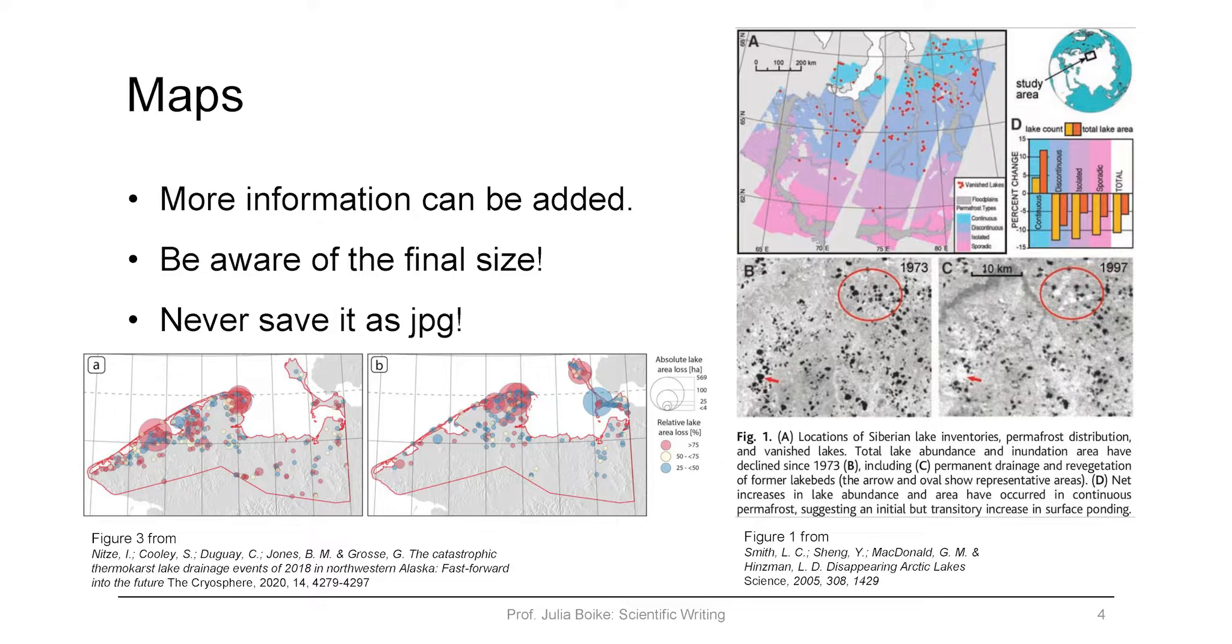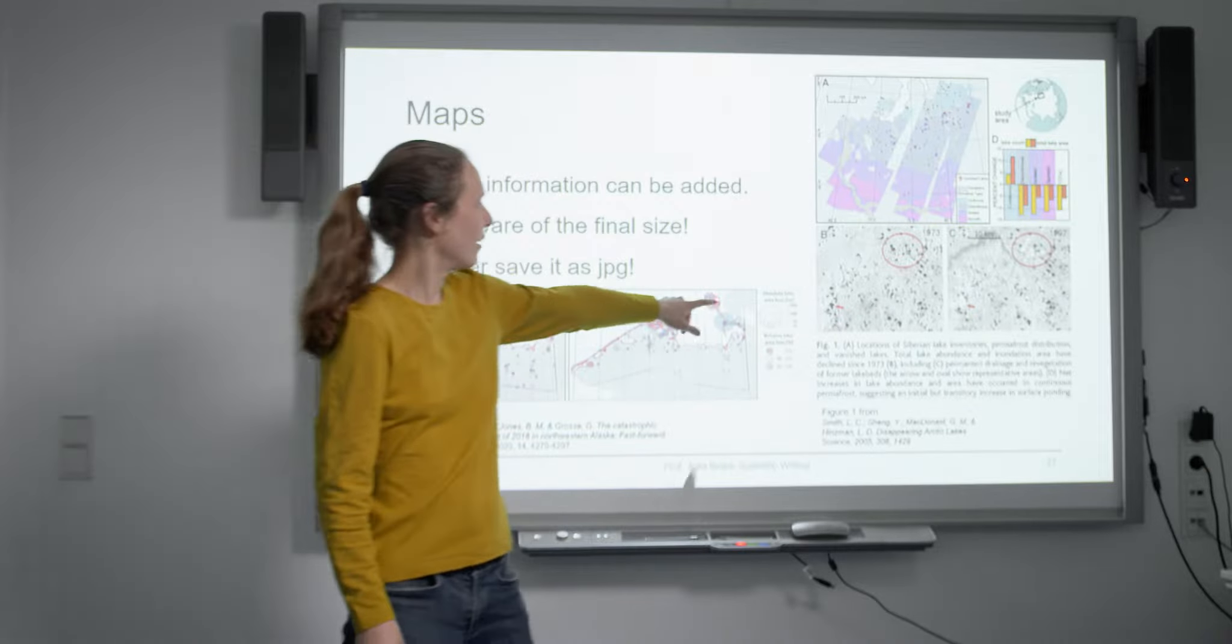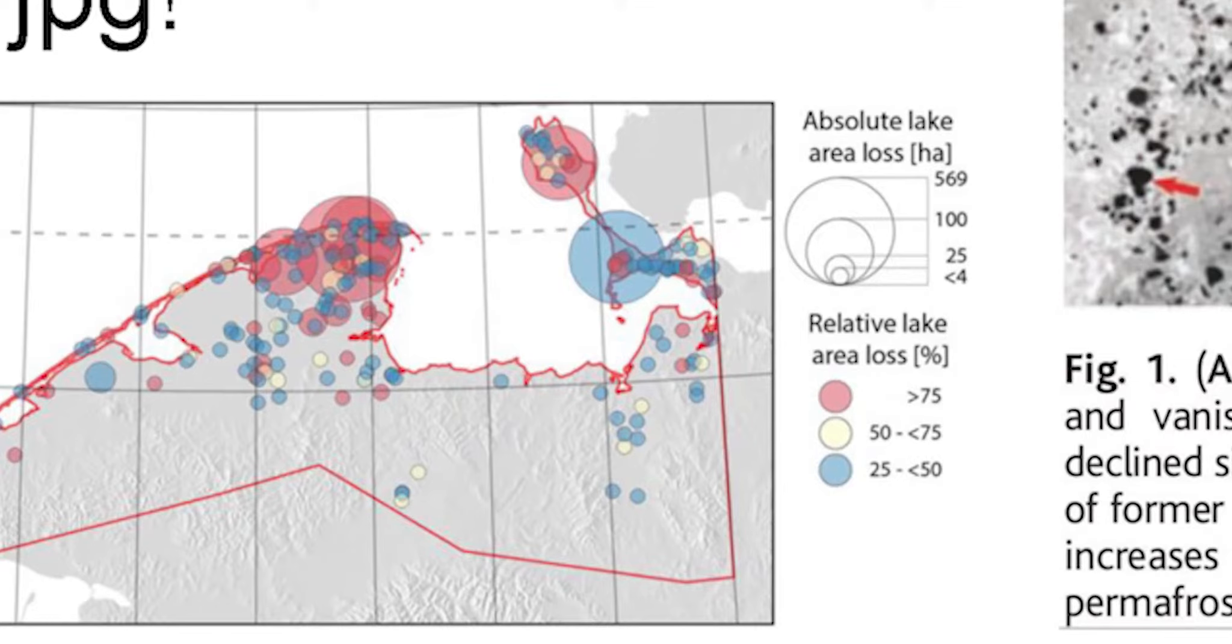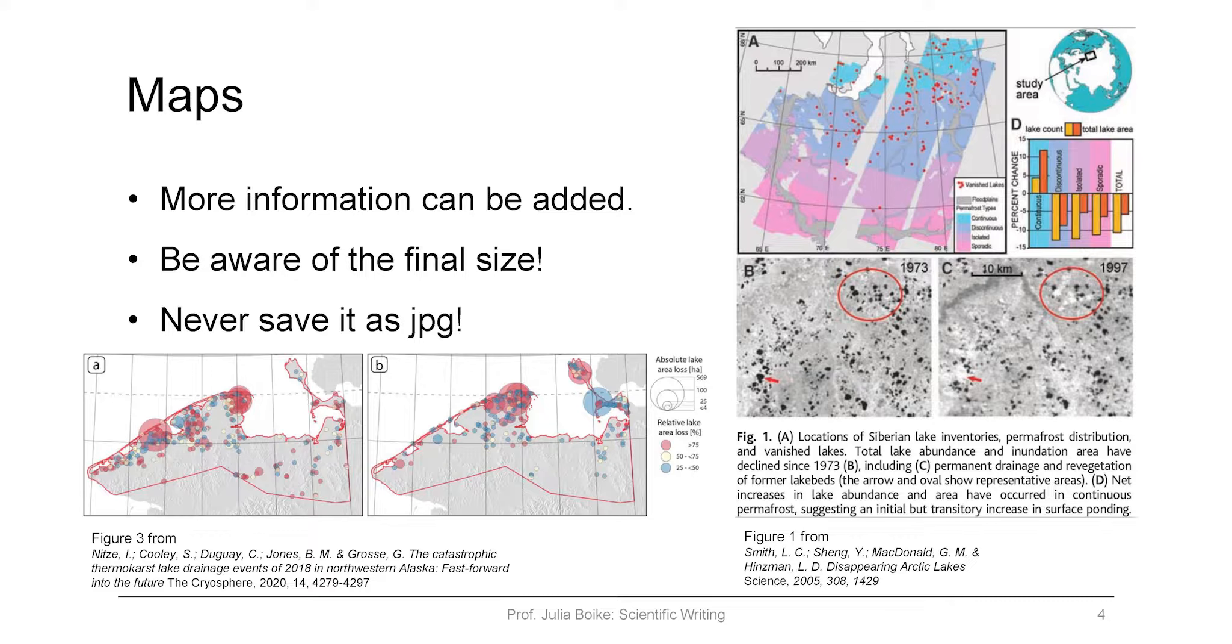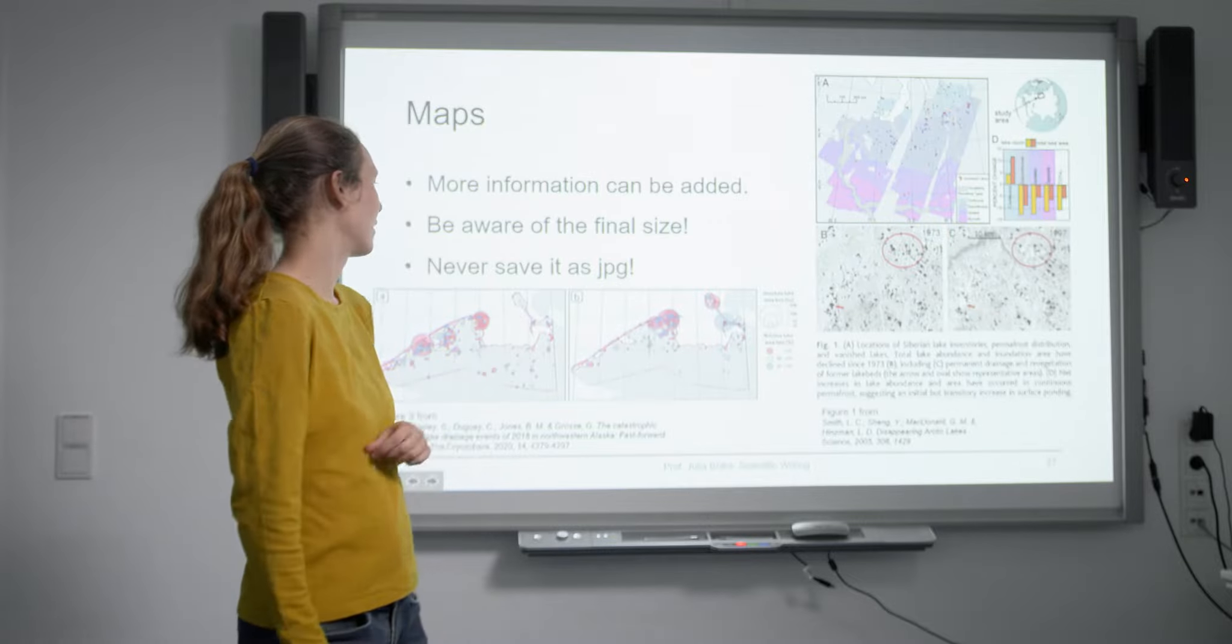You can add a lot of different information types. Here for example all these little dots show where lakes disappeared in the Seward Peninsula in Alaska. This is a study of a colleague of ours also from ARWI who studied remote sensing images of this peninsula and showed all the different lakes that either shrank or completely drained. The legend includes two different items: one is the absolute area of lake loss and the color codes the relative lake loss. So you can show both the absolute loss and the relative loss in the same map with size and color. I like this example, I think it's very clear.